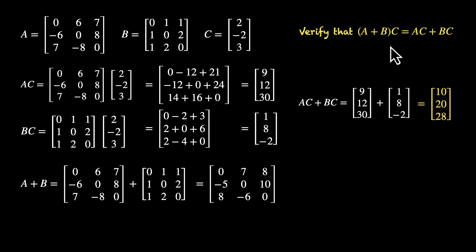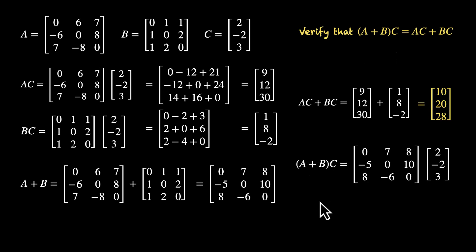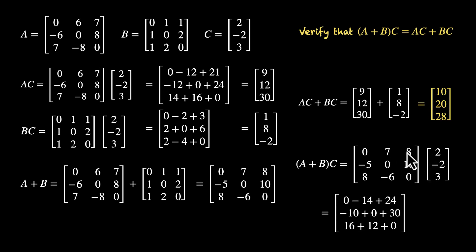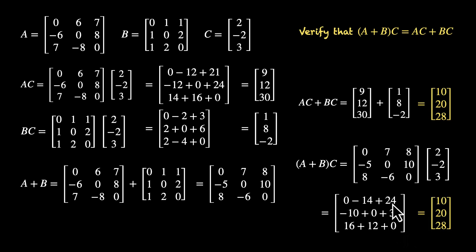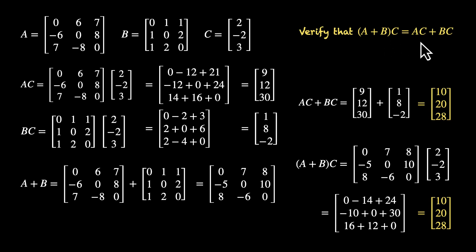Now let's multiply (A + B) times C. First element: 0 − 14 + 24. Second element: −10 + 0 + 30. Third element: 16 + 12 + 0. Simplifying: 24 − 14 = 10, 30 − 10 = 20, 16 + 12 = 28. So the left-hand side is [10, 20, 28] — equal to the right-hand side. We have verified that (A + B)C = AC + BC.